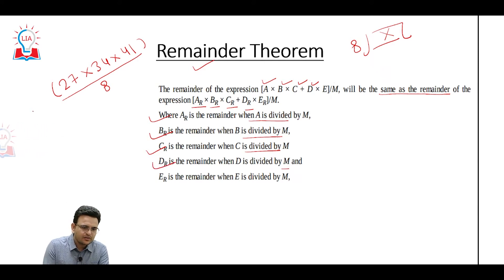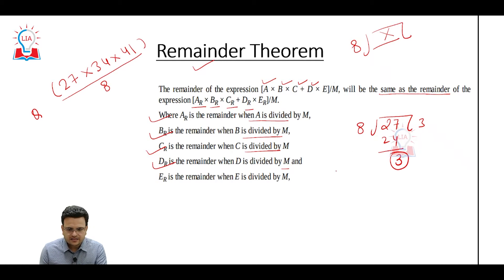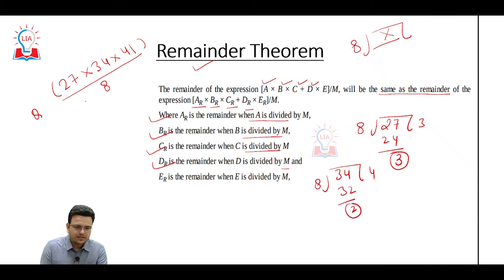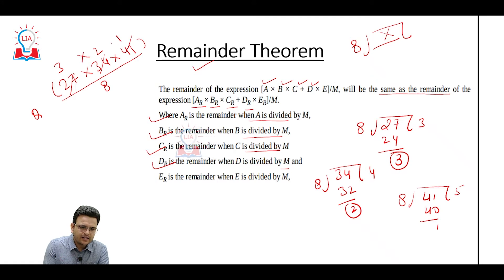So in this particular question we will try to get each remainder. 27 divided by 8 — remainder will be 3. 34 divided by 8 — 8 fours are 32 — remainder will be 2. 41 divided by 8 — remainder is 1. Now I can multiply 3 × 2 × 1 = 6, so the answer will be 6.